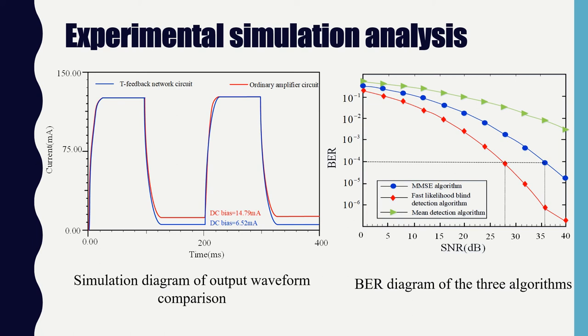It can be seen that the algorithm used in this paper not only meets the need for BER performance, but also reduces computational complexity and improves the communication rate. It has advantages in high-speed signal transmission of the visible light communication system.